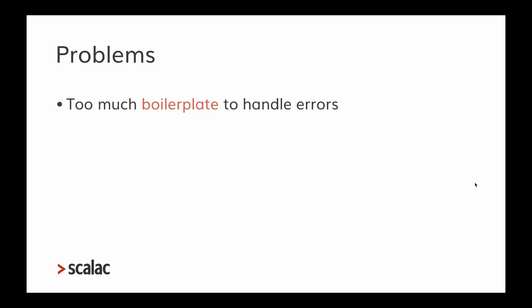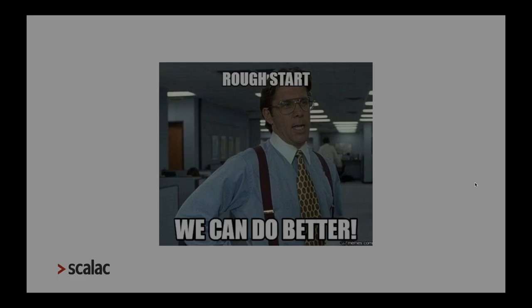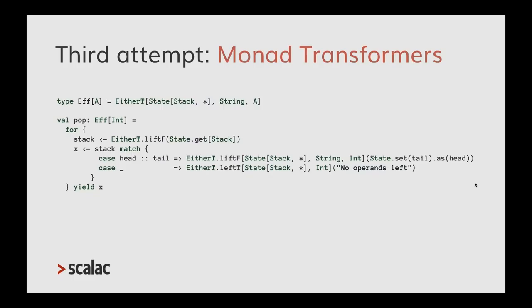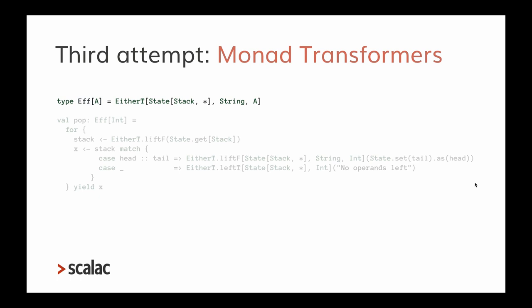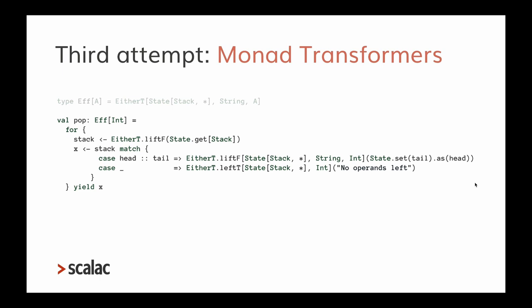We can do better. Let's try monad transformers: instead of having Either inside State, I use the EitherT transformer over State. Looking at the pop method implementation, there are awful type annotations and many calls to EitherT.liftF. The solution is harder to understand and requires more type annotations than before, though the core solution does fit in one slide.